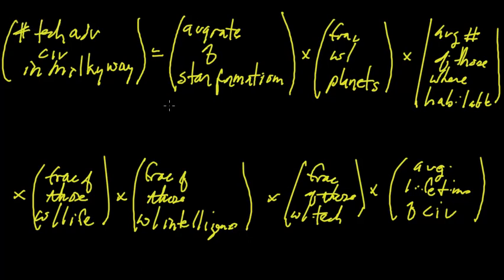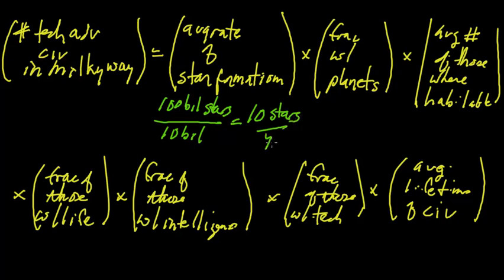For instance, the average rate of star formation, there's about 100 billion stars in the Milky Way galaxy. The Milky Way galaxy has been around for about 10 billion years, so this translates roughly into 10 stars per year. So this is our answer for that one.